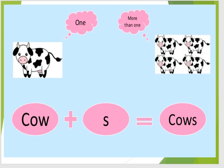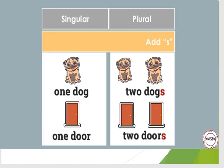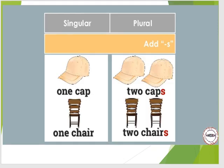Now let's look. Here is one cow, but here there are many cows — there are four cows. In this case, we add S to form plural. We say cows; it is plural. Here is one dog, but here are two dogs. One dog, two dogs. One cap, two caps. One chair, two chairs.